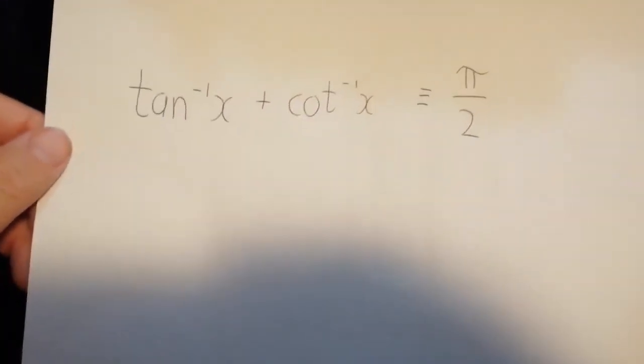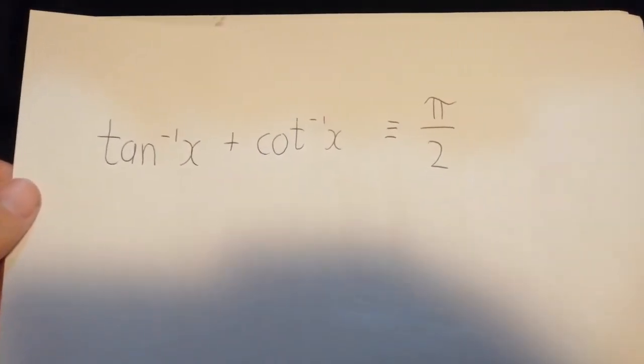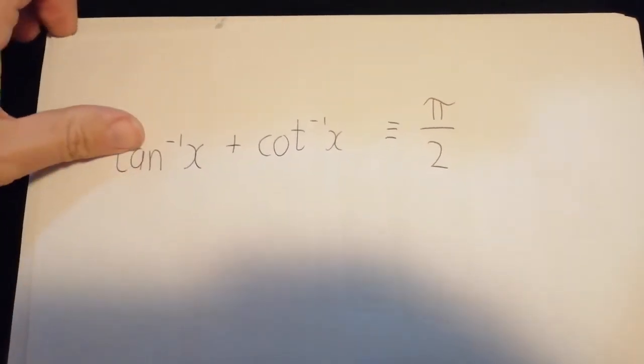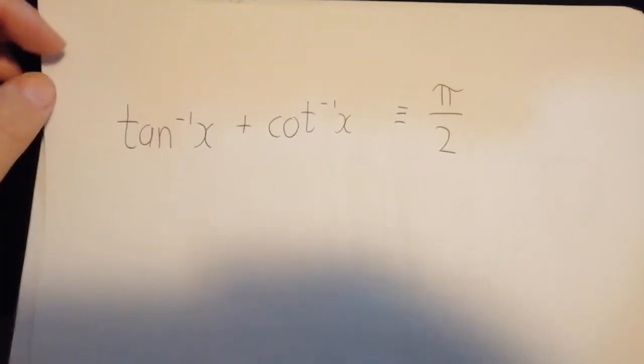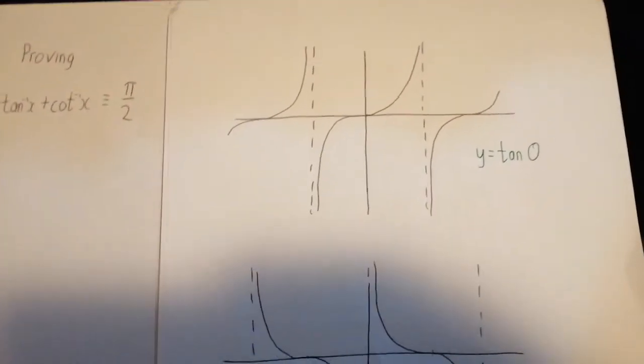So there are other videos out there that show this quite nicely, but I don't feel what they do is show enough of where the replacement of tan with cot comes from. And the best way, the way I show it to my classes, is to remind them of what the graphs look like.